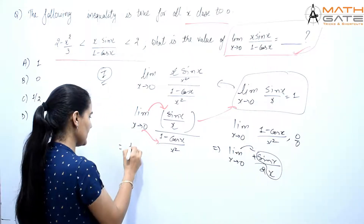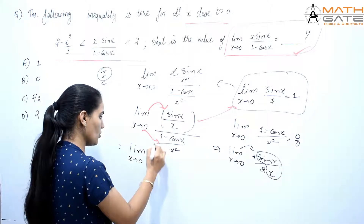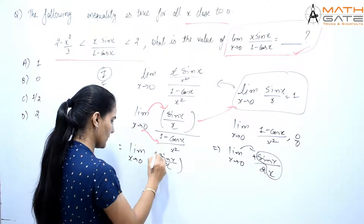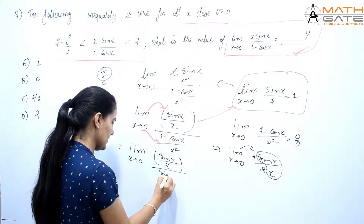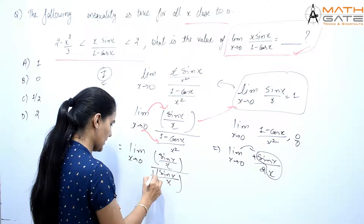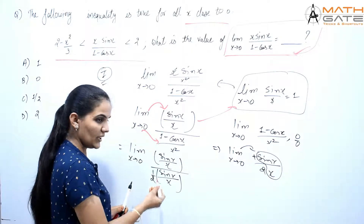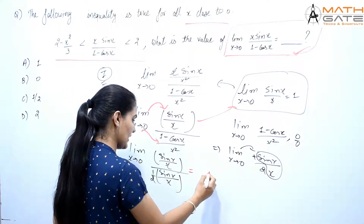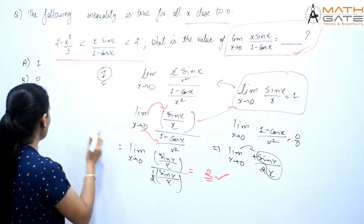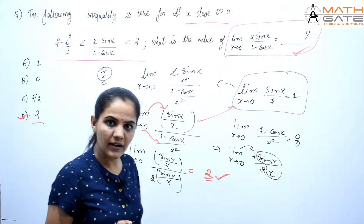Now putting it all together: limit x tends to 0 of [sin(x)/x] divided by [sin(x)/x · (1/2)]. Since sin(x)/x → 1, we have 1 divided by (1/2), which equals 2. So the direct answer is 2, which means option number D is the correct answer.